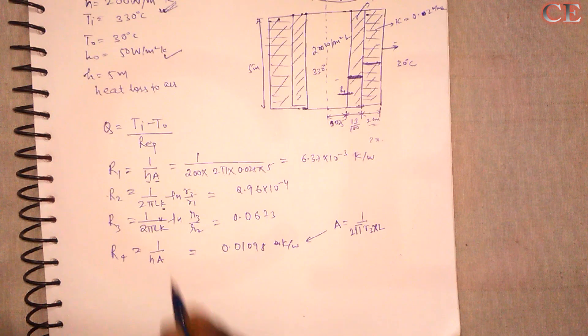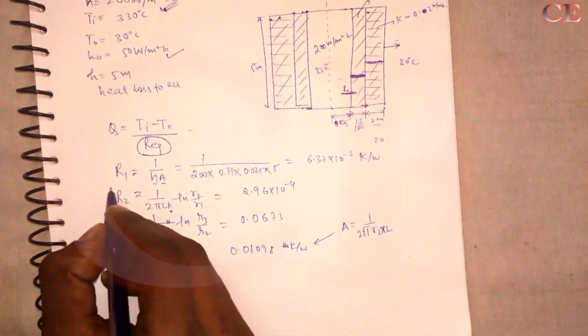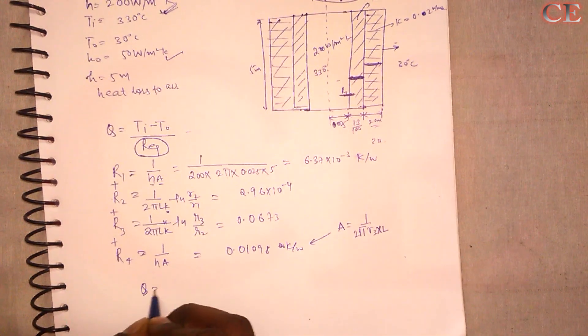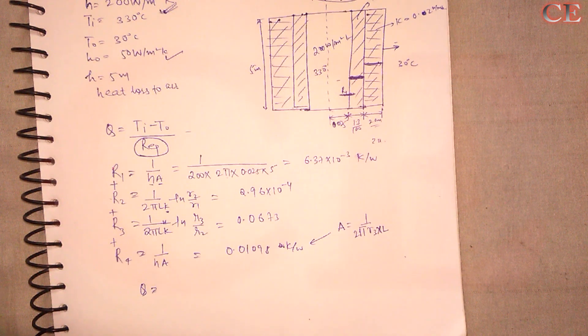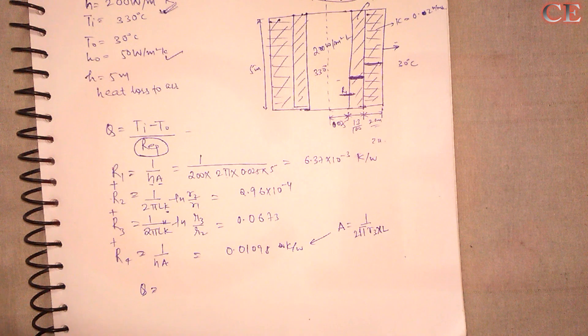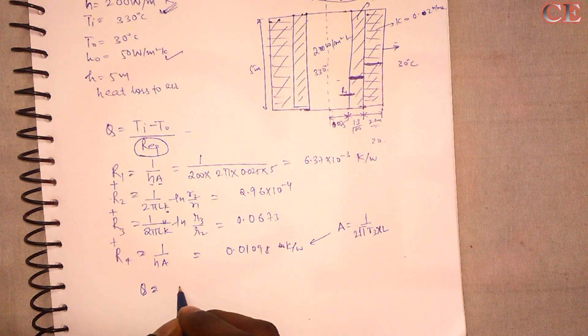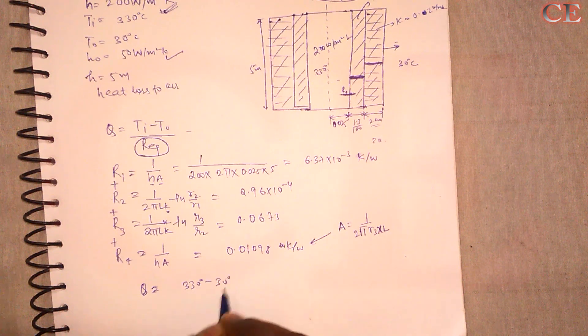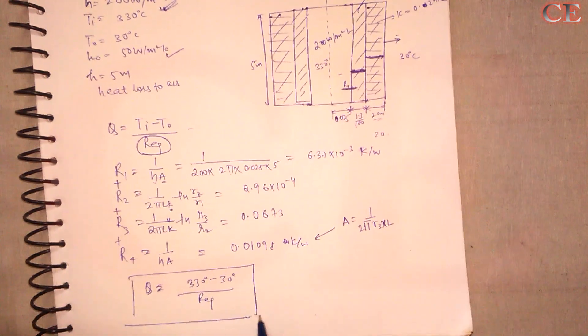Now we are obtained all four required values. So we need to put this in this equation. We need to add all these R1, R2, R3, R4. Put in this. So after following this write, write it down the answer in the comment box. And tell me what is the answer you obtained. Now in T inner is equal to 330 minus 30 upon R equivalent that you have obtained. And this will be the answer.